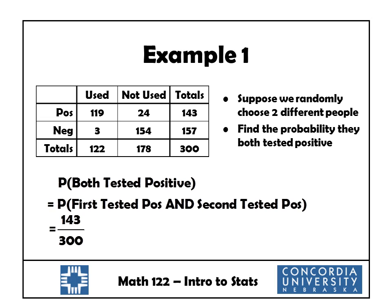Now I have to calculate the probability that the second person tested positive, taking into account the fact that I've already chosen one person that tested positive. When I choose that second person, I've only got 299 to choose from — that's my denominator. Out of those, I only have 142 people left who tested positive. So it's 142 divided by 299, and I multiply them, and I get my probability 0.226. In practical terms, this means that if I were to do this procedure a whole bunch of times where I chose two different people, about 22.6% of the time I get two people that tested positive.